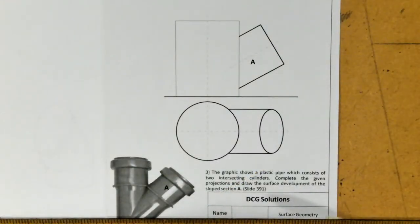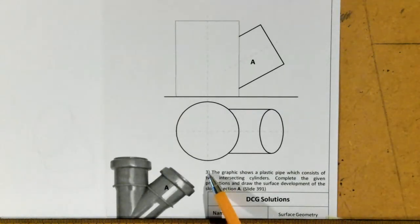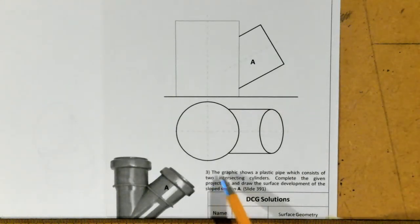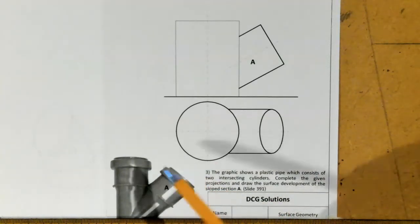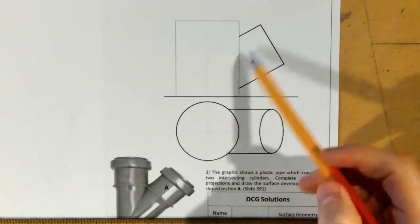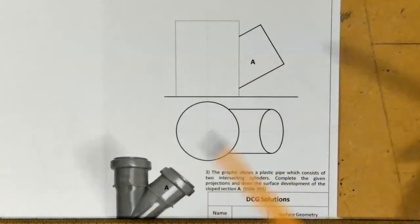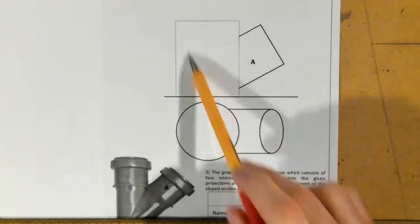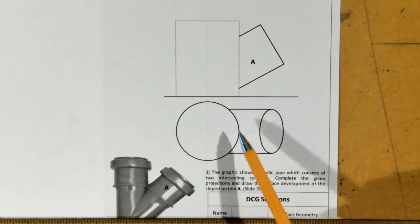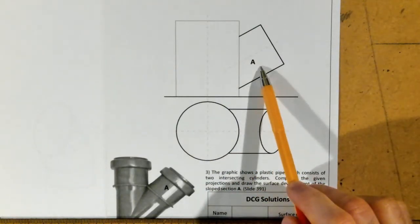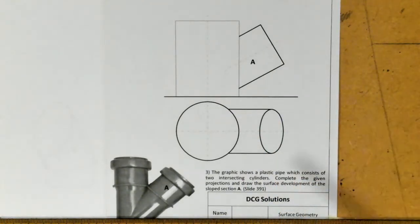The question we're doing today is from the DCG Solutions Workbook, question 3 on page 131. It shows a plastic pipe consisting of two intersecting cylinders — cylinder A and another. We have to complete the given projections and draw the surface development of section A. The plan has been fully completed already, so we need to complete the elevation and develop out cylindrical surface A.